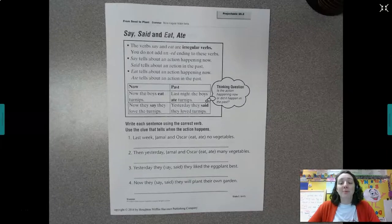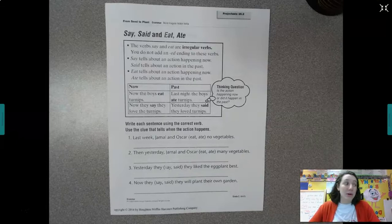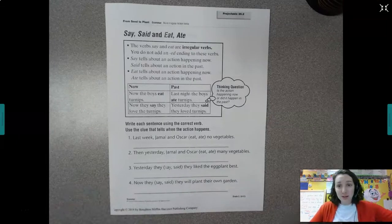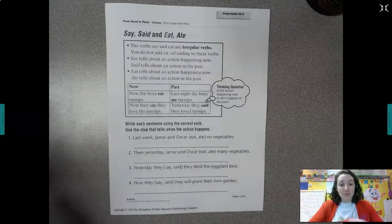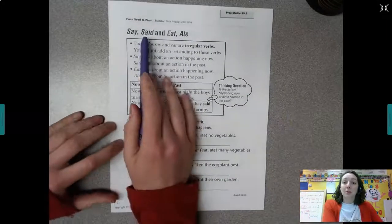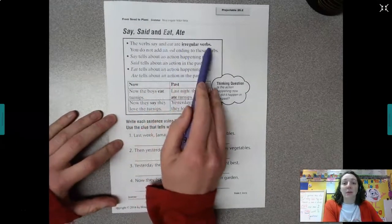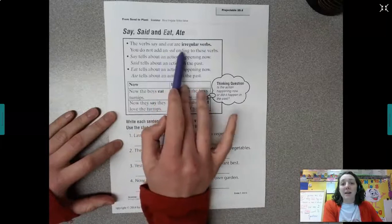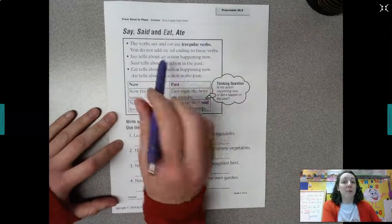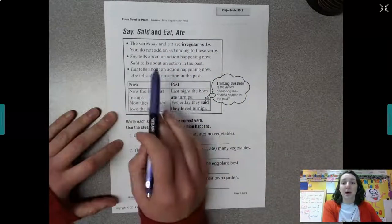Hey guys, we're going to talk about some more irregular verbs this week. So even more. We've been doing irregular verbs for a couple weeks now, and we're just going to focus on even more today. So the verbs say and eat are irregular verbs. You do not add that ed ending to these verbs, so we're still talking about past tense, things that happened in the past.